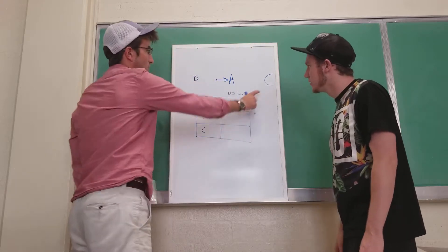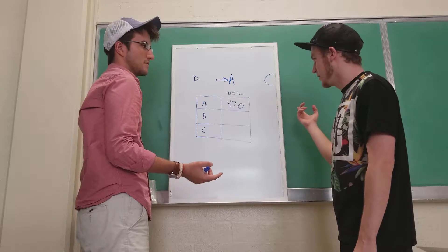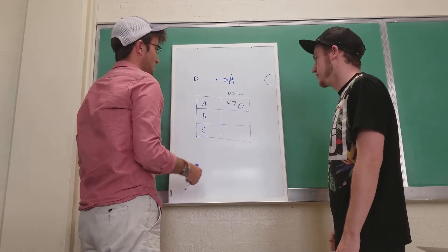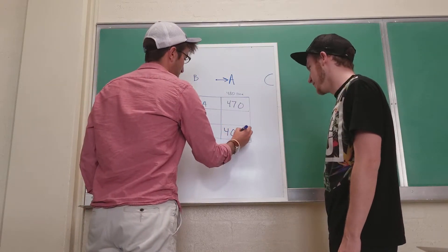And then since we're also moving towards C, but it's further away, it'll be a bigger shift. So it would be even smaller than 400. Why don't we just say like 400? That's really far away. Even number.